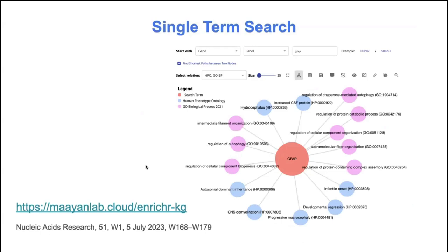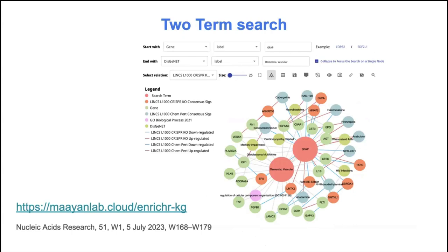We also have the single term search, where you start with a gene or a term and it shows the immediate neighbors — the immediate associations. For example, here we have GFAP. There was a recent paper showing that GFAP is a really efficient biomarker for dementia, able to predict it at least 10 years in advance. I searched GFAP using Human Phenotype Ontology and Gene Ontology Biological Process, and you can see terms like developmental regression and demyelination, which are related to dementia and Alzheimer's.